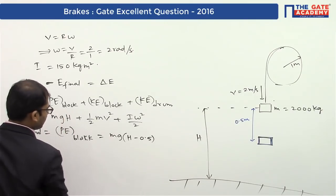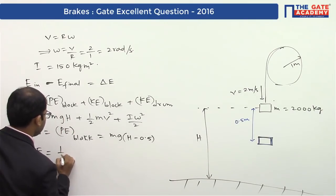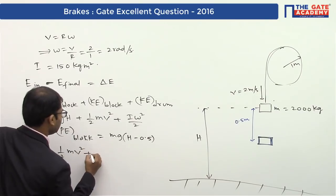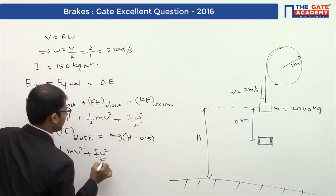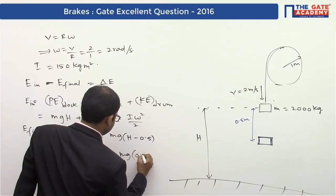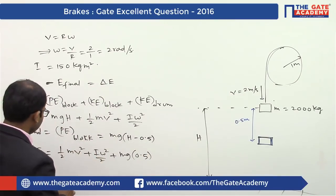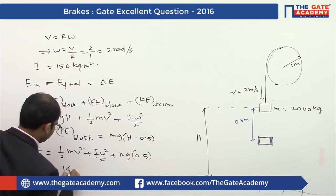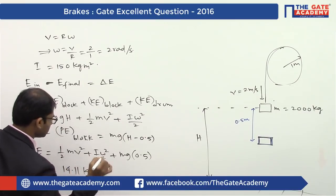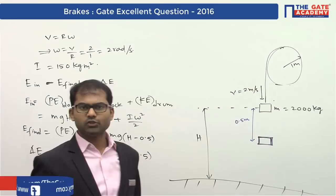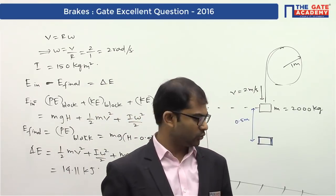If you take the difference, you get the answer as (1/2)m·v² + (I·ω²)/2 + m·g·(0.5). You know all the values. If you substitute, you get the final energy as 14.11 kJ.